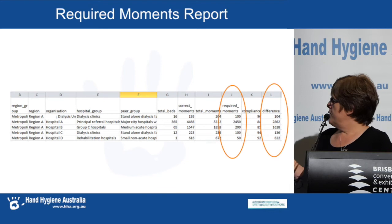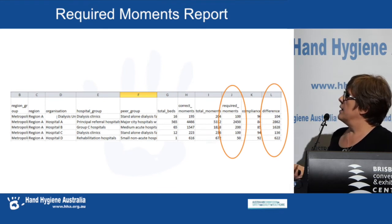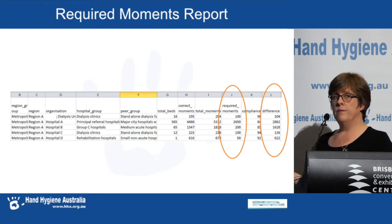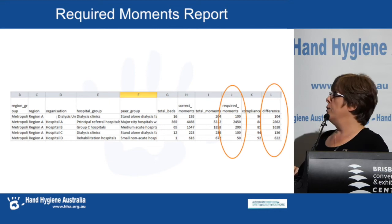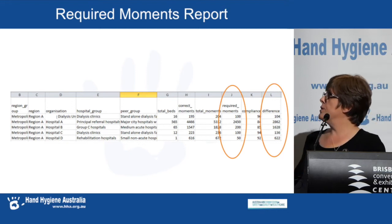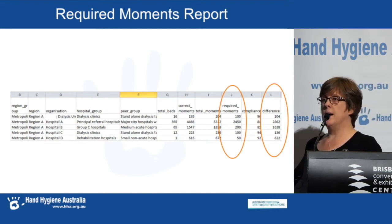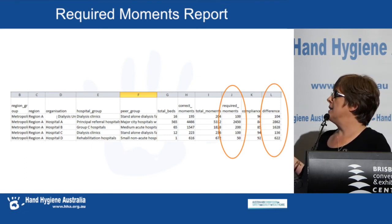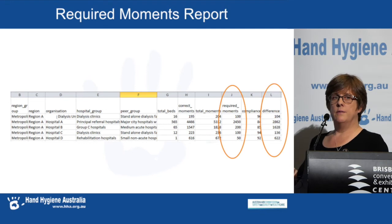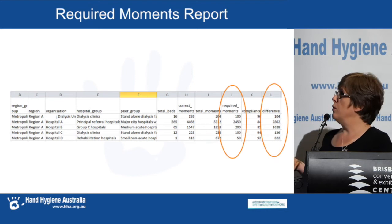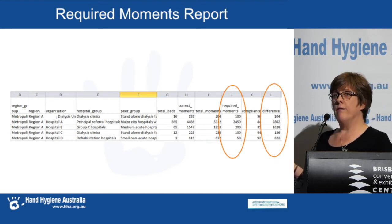The other report is the required moments report. This is a summary line of data for every organisation. If you're a region administrator with a number of organisations, you'll see a line for each one. One column shows required moments — how much data you're required to submit according to the details in HICAP — and the last column shows the difference, meaning how much excess data was collected for that period. You'll be able to see very clearly how much data you needed to collect and how much above that was collected.